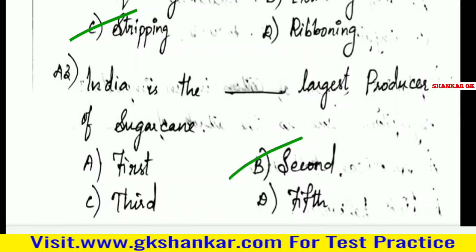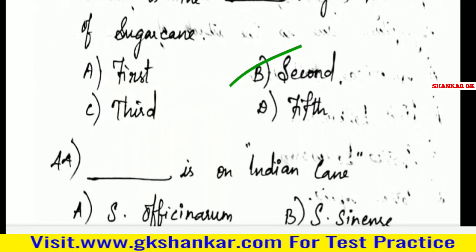Forty-third question: India is the second largest producer of sugarcane. Note: India is the third largest in sugar production.